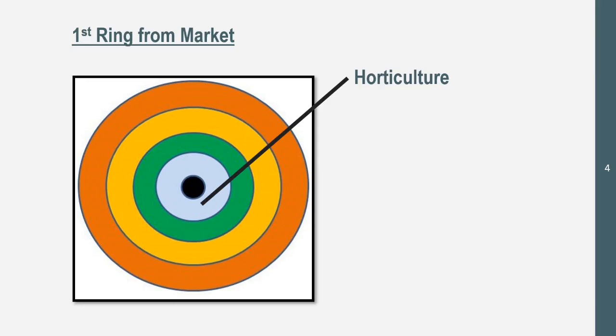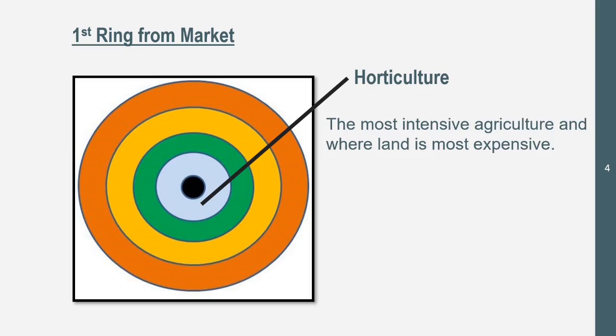The first ring from the market is horticulture. This is where the most intensive agriculture is located and where land is most expensive. So the closer to the market, the more intensive your agriculture is going to be. Intensive agriculture has less land than extensive agriculture, and this is probably due to land being more expensive than the outer rings farther from the market.